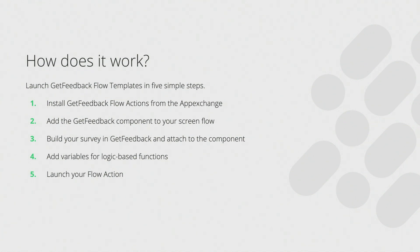We're going to get into some concrete examples in just a moment. First, let's talk about how to set up a Get Feedback Flow action on your Visual Flow setup. It's really simple. You start out by going to the AppExchange and downloading our Flow Actions package. The Flow action is the actual component you install into your Salesforce org, and the Flow template is an example project that shows you how to use that component. Once you have that installed, you click and drag the Get Feedback component onto a screen in your Visual Flow.